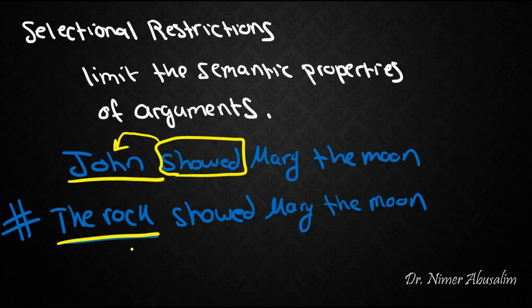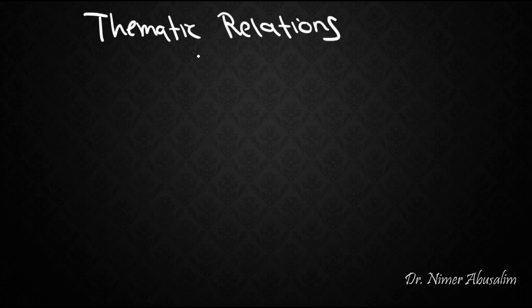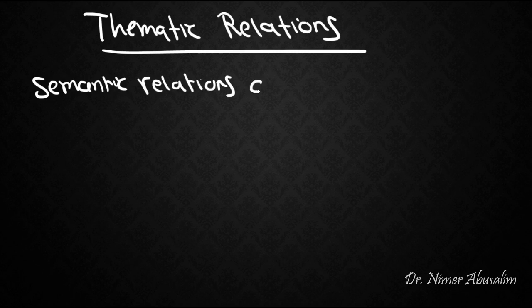John is a person who can do that, but the rock is an object which cannot show. Therefore, we have a list of what we call thematic relations. These thematic relations describe the semantic relations between an argument and a predicate.